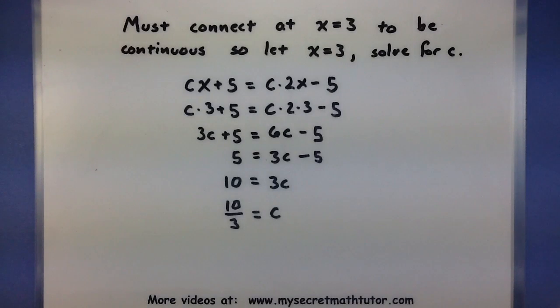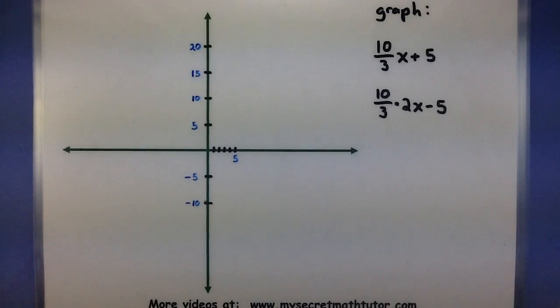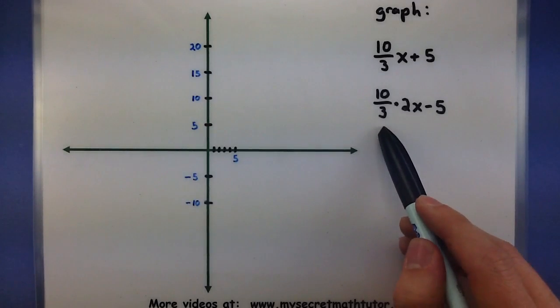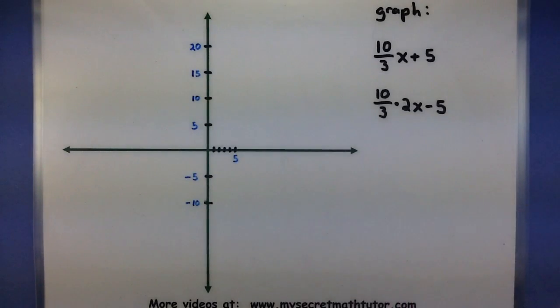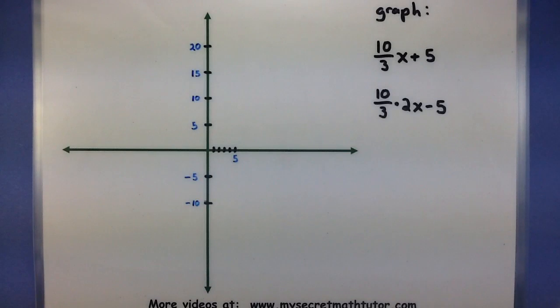Just to be on the safe side, let's go ahead and graph what we have to make sure that the two parts really do line up. So here I've made a graph and I want to essentially graph 10 thirds x plus 5 and 10 thirds times 2 times x minus 5. These are essentially both parts with that value of c plugged in.